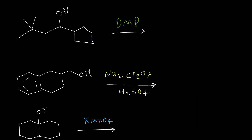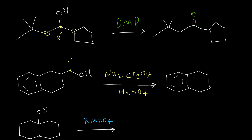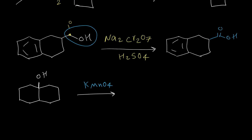Here are some more examples. In the first example, this carbon is secondary because it's attached to two carbons, so the alcohol is secondary. Oxidized by DMP, we repeat the whole structure and replace the single bond oxygen with a double bond oxygen to give a ketone. In the second example, we have a primary alcohol, and because we don't have DMP or PCC, the product is carboxylic acid — we convert CH2OH to the carboxylic acid functional group. In the third example, the alcohol is tertiary, so there is no oxidation — the answer is no reaction. Thank you for watching.